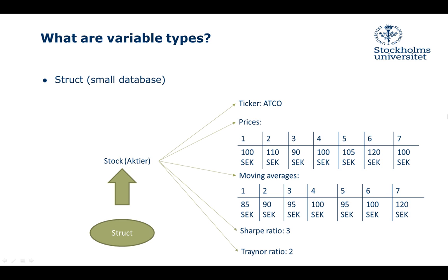Why is it done like that? It's much easier to refer to different stocks this way. You can just say, I'm picking this first stock and I have everything - ticker, prices, moving averages, Sharpe ratio, Treynor ratio - all in one place.